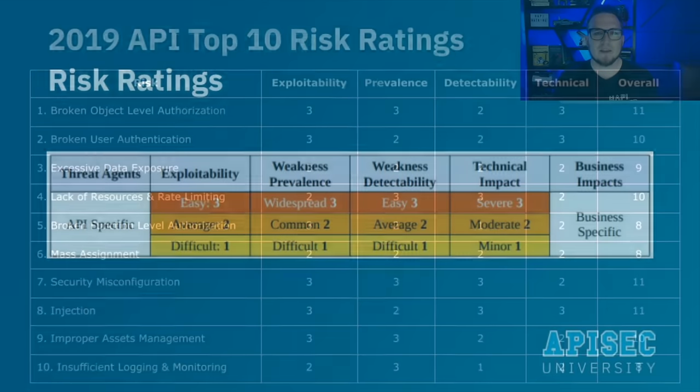API3 2023 — Broken Object Property Level Authorization, or BOPLA, is a combination of two items from the 2019 OWASP API Security Top 10: excessive data exposure and mass assignment. Excessive data exposure takes place when an API provider responds to a request with an entire data object rather than filtering it down to what's being requested, increasing the risk of exposing sensitive information. Mass assignment is a weakness that allows user input to alter sensitive object properties, potentially enabling an attacker to elevate their privileges by altering administrative properties.